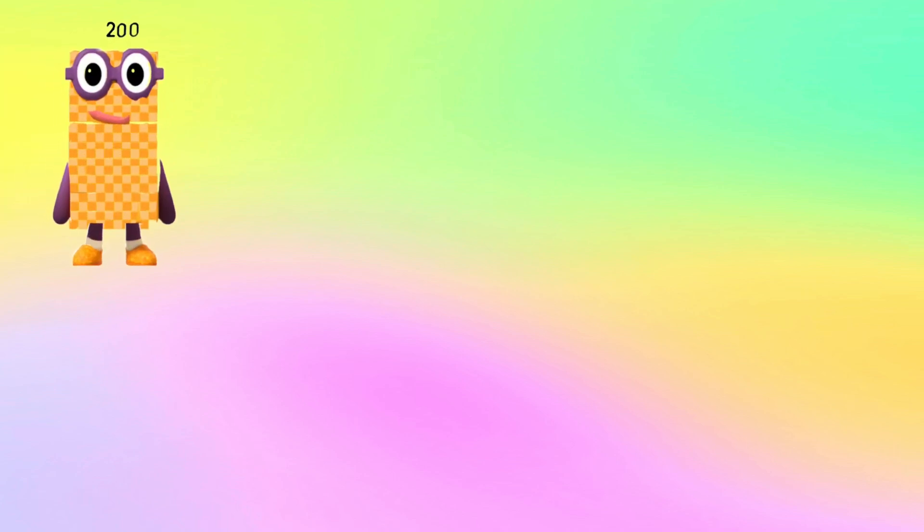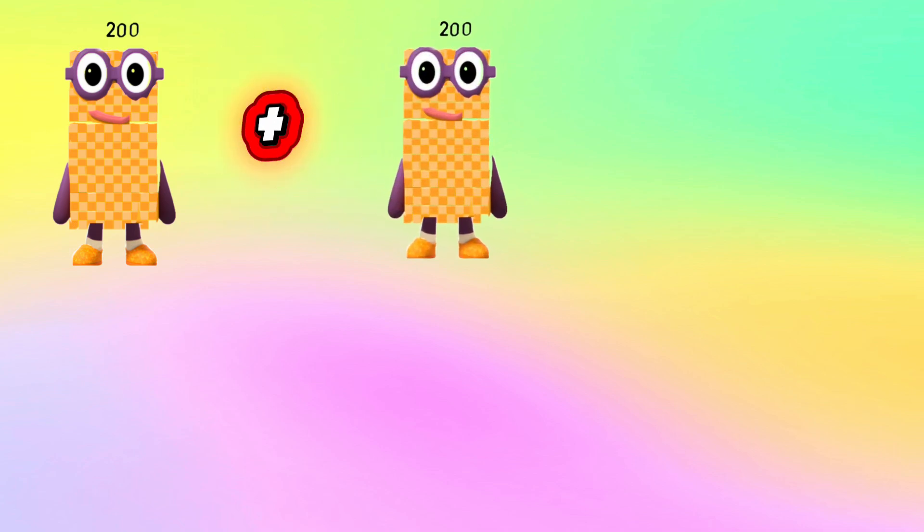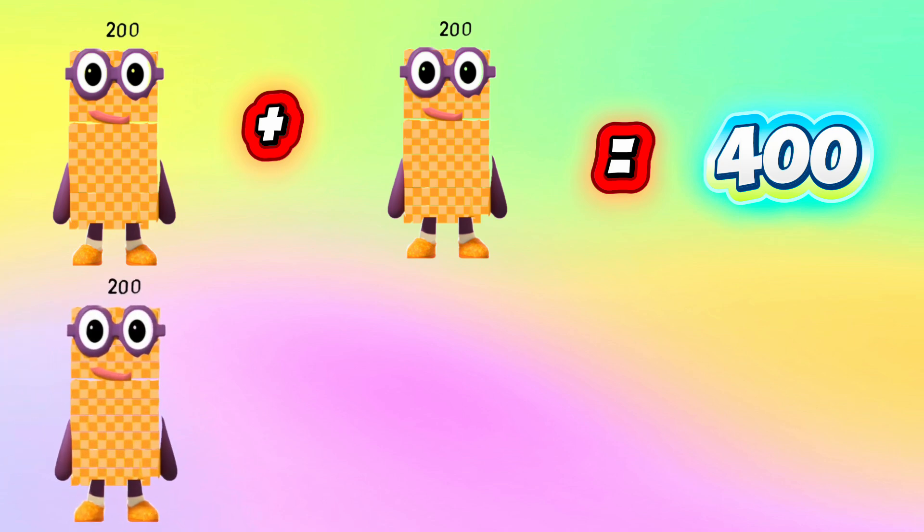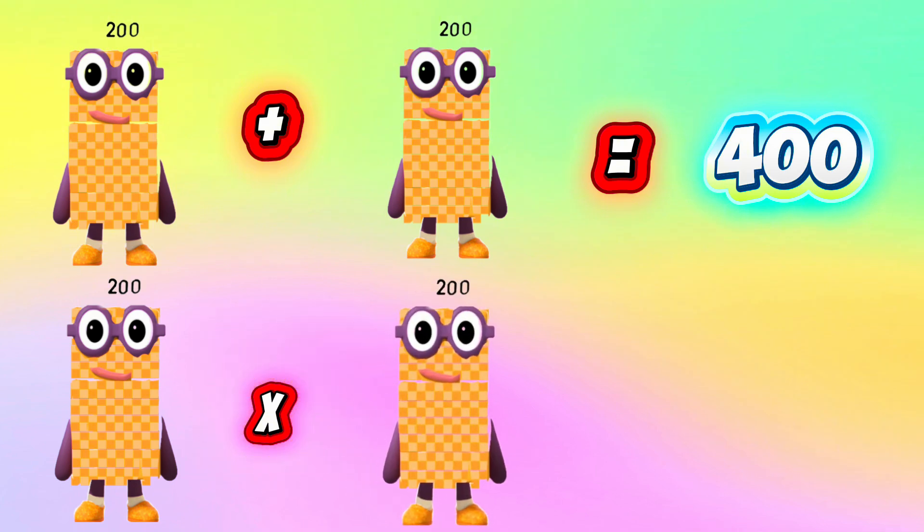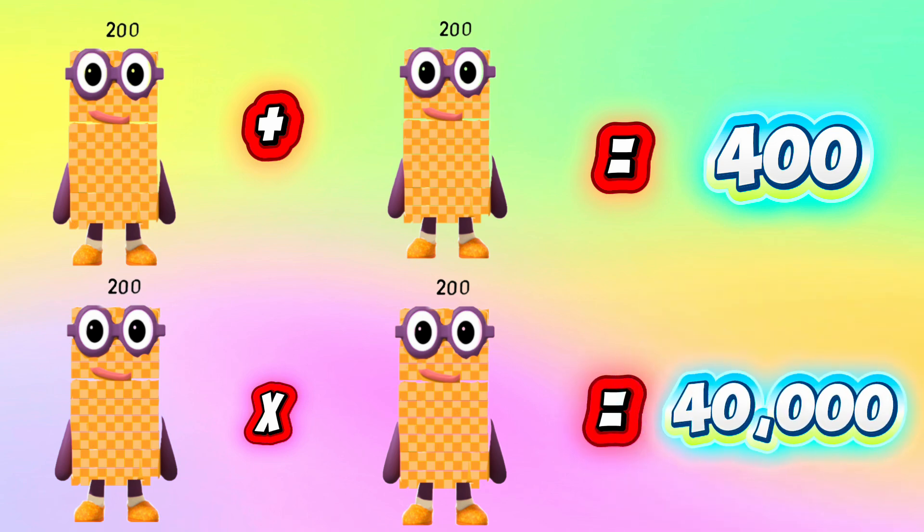Next, 200 plus 200 equals 400. In multiplication, 200 multiplied by 200 equals 40,000.